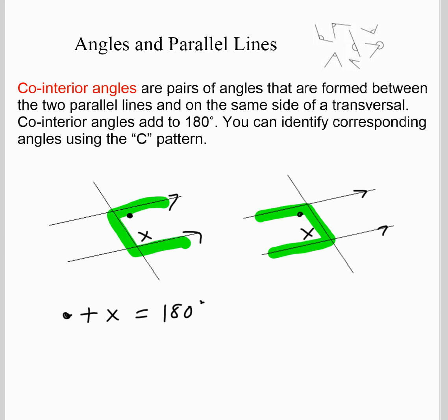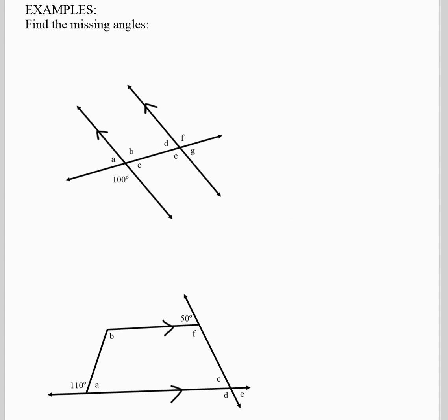And again, those are C pattern angles. Actually, I just noticed a typo in this here. That should say you can identify co-interior angles. So let's look at this in practice. How do we actually use this to help us find missing angles?